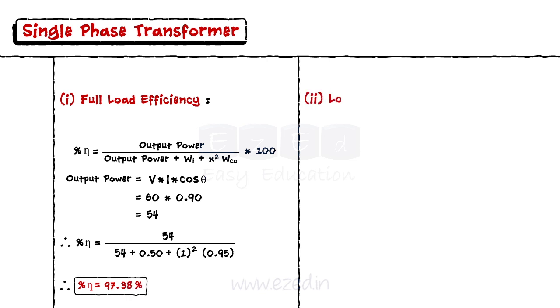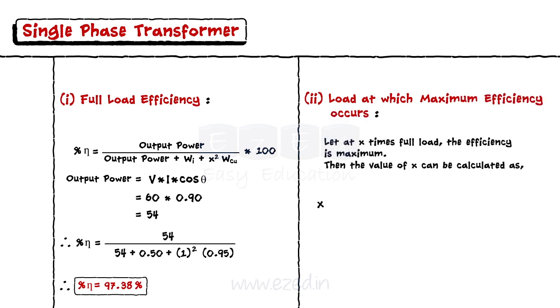To calculate the load at which we get the maximum efficiency, we use the formula: x equals square root of iron loss upon full load copper loss.